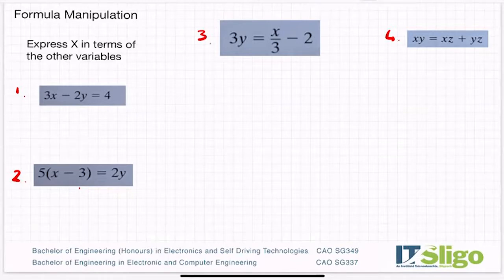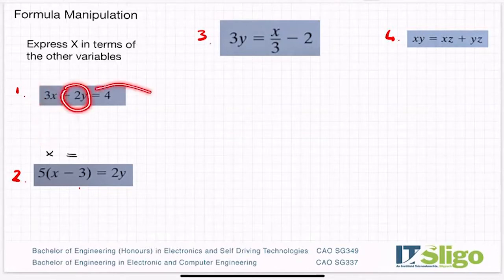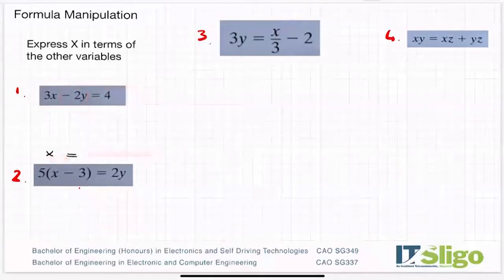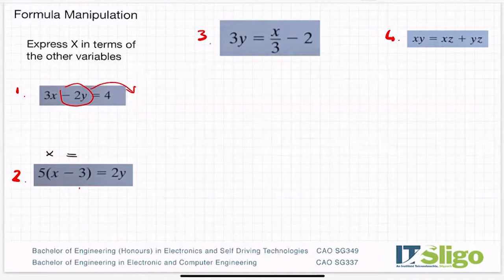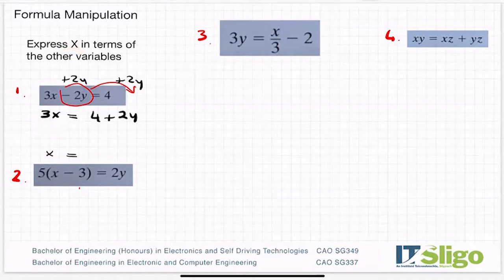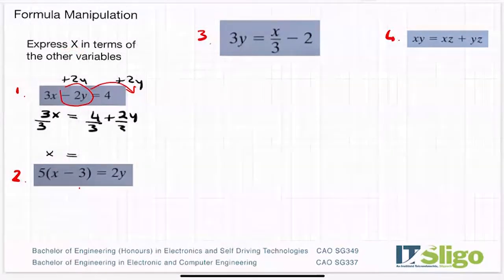Question one: we have 3x minus 2y equals 4. My goal is x equals, so I want to leave the x's on the left. That minus 2y — bring it over to the other side and it changes sign, so it becomes plus 2y. So 3x is equal to 4 plus 2y. I want to express x, not 3x, so I need to remove that 3 from in front of the x. Therefore x is equal to 4 over 3 plus two-thirds y. And that's your full answer.